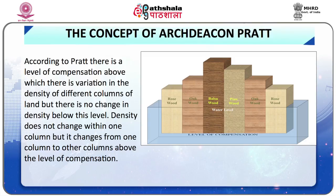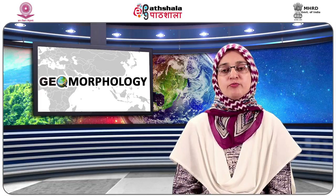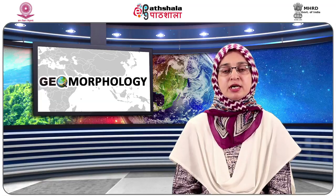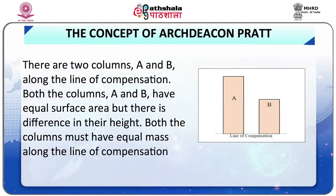According to Pratt, there is a level of compensation above which there is variation in the density of different columns of land, but no change in density below this level. Density does not change within one column but changes from one column to another above the level of compensation. Thus, the central theme of Pratt's concept may be expressed as uniform depth with varying density. According to Pratt, equal surface area must underlie equal mass along the line of compensation.